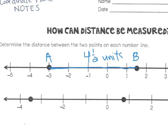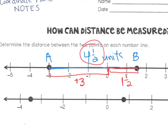Another way that we can find the distance is we could look at the absolute value for each of these points. Absolute value is the number's distance from zero. Here's zero — if I go down to point A, that's going to be negative three, or three units away from zero. And then if we go to point B, from zero to that point, we have one and a half. So three plus one and a half is going to get us our four and a half units again.